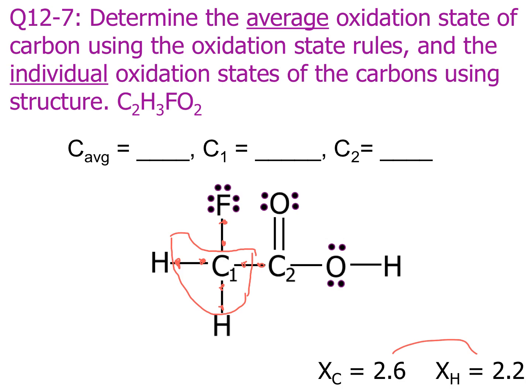So if I look at the oxidation state of carbon 1, remember that it's group number minus possession number. Carbon is group 4, and I can see 5 electrons in the circle, so carbon 1 has oxidation state minus 1.